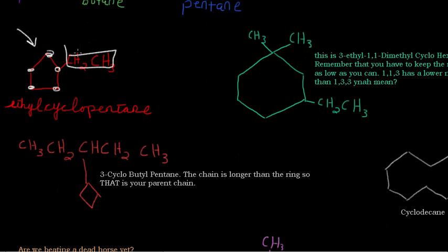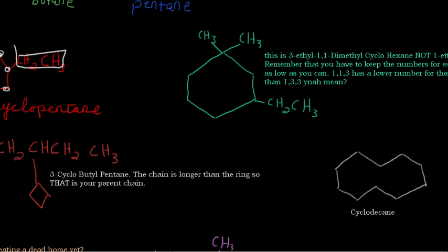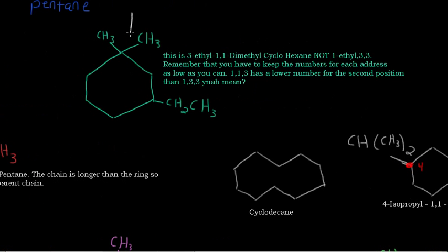So that's ethyl-cyclopentane. Coming over here, this here is 3-ethyl-1,1-dimethyl-cyclohexane. This is not 1-ethyl-3,3. Remember that you have to keep the numbers for each address as low as you can. So 1,1,3 has a lower number for the second position than 1,3,3. So this is 1,1-dimethyl and here's your 3-ethyl.